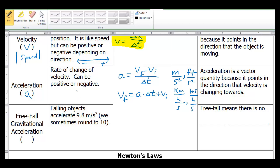Let's take a look at free fall gravitational acceleration in particular. The symbol that we use for that is lowercase g. Falling objects accelerate 9.8 meters per second squared. We sometimes round to 10. For this equation here, final velocity, I can substitute this a for g if something is free falling. Free fall means there is no air resistance. The only force acting on the object is gravity.